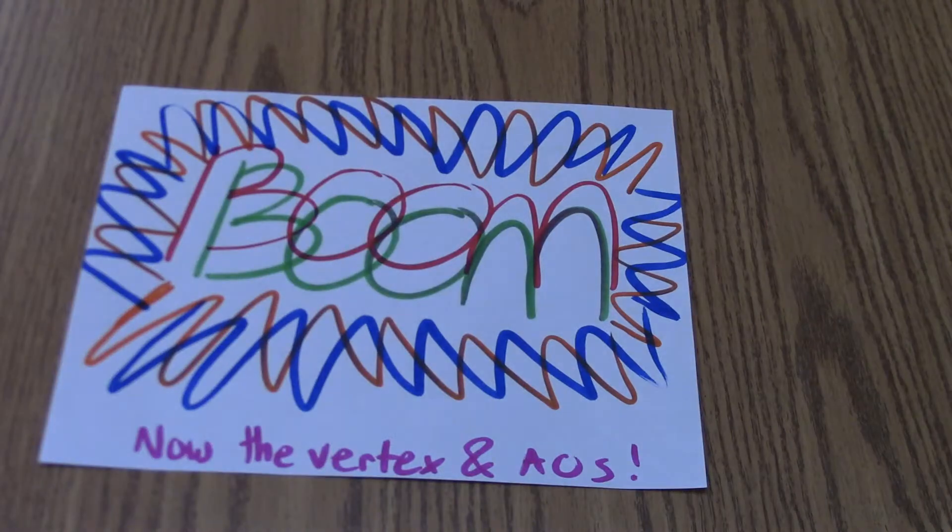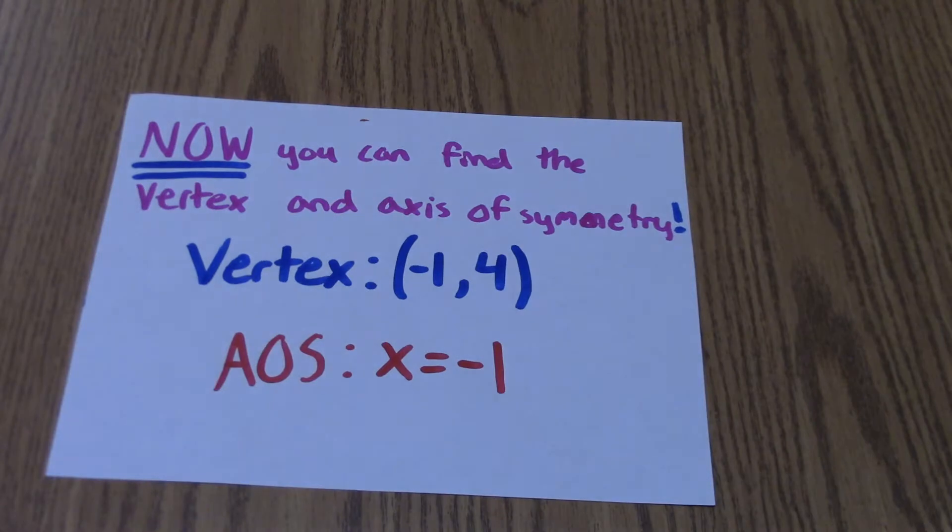Boom! Now we have the vertex and axis of symmetry. The vertex is negative 1, 4, and the axis of symmetry is the line x equals negative 1.